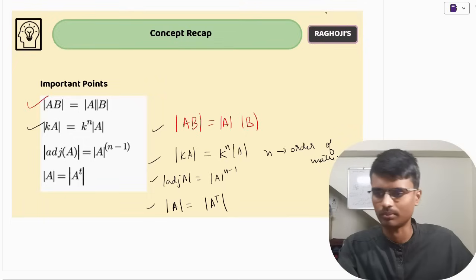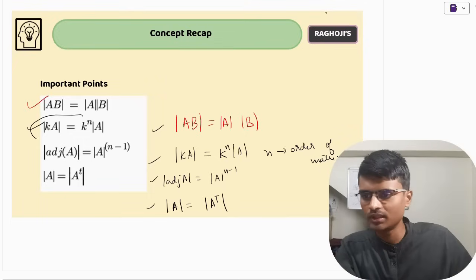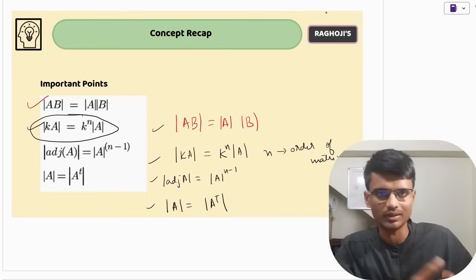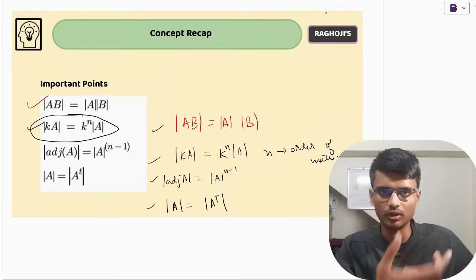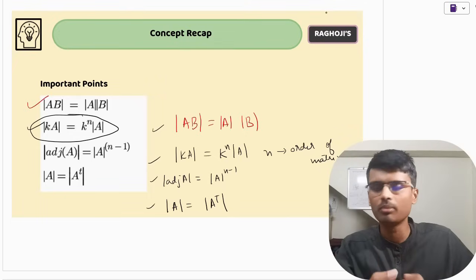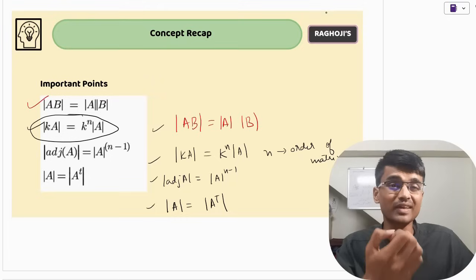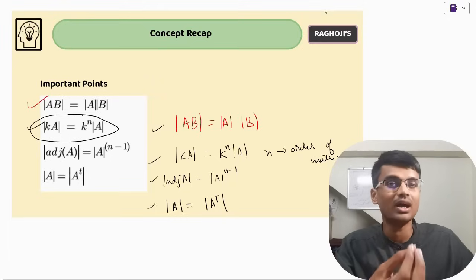On these properties, direct questions are asked. We will see the questions and be able to solve them in seconds — hardly 10 seconds, not more than that.